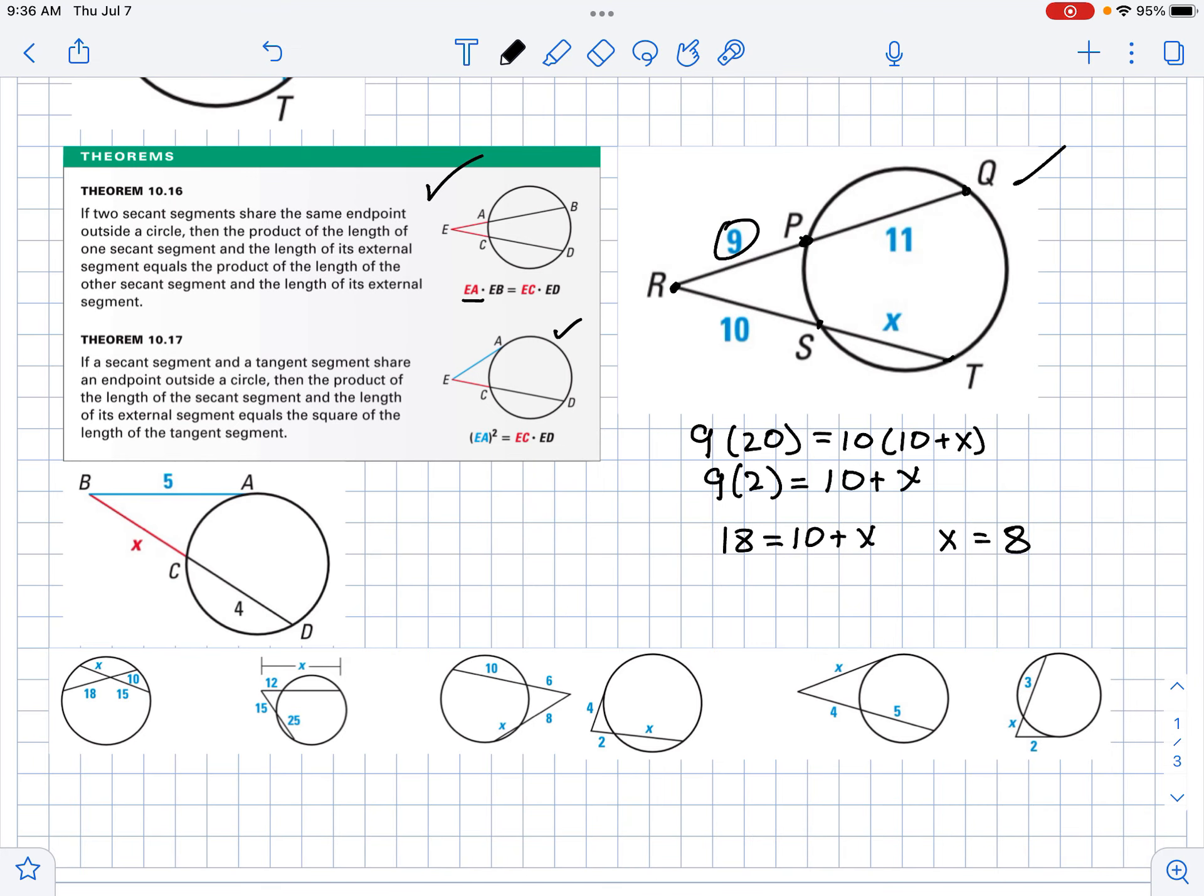Now you'll notice down here we modified the problem a little bit. Now you don't have two secants going through, you have a tangent. So notice I have a tangent at A. So how do we deal with that? Here's what it's going to be: 5 times 5, so it's 5 squared equals EC times ED. So this is going to be X times X plus 4. And then we can find X.